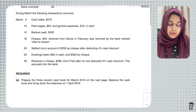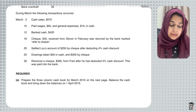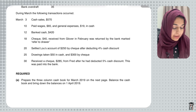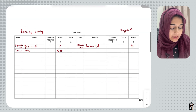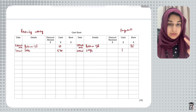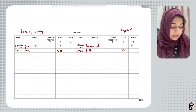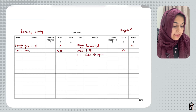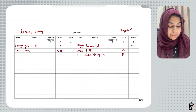On 10th March, paid wages $65 and general expenses $19 in cash. Since these are payments, I record them on the credit side of the cashbook. I write 10th March, wages, and $65 in the cash column. Then for the same date, I write general expenses and $19 in the cash column.